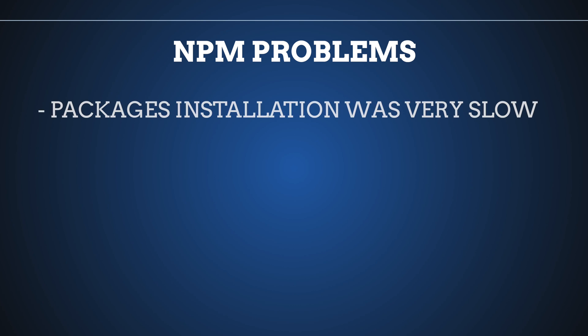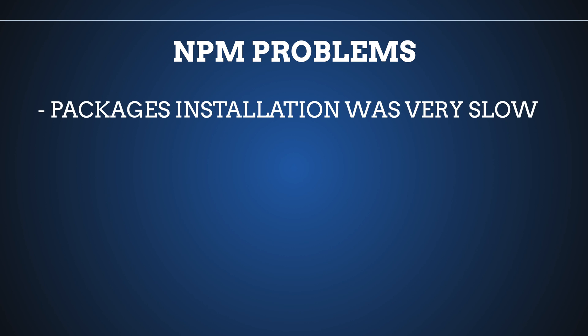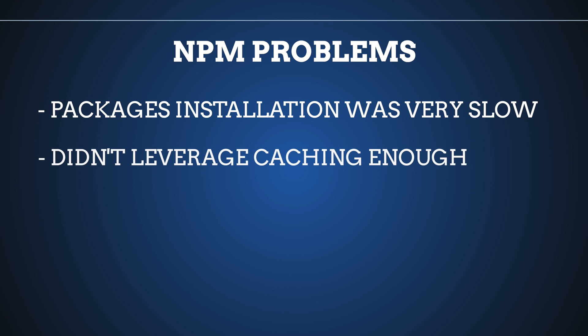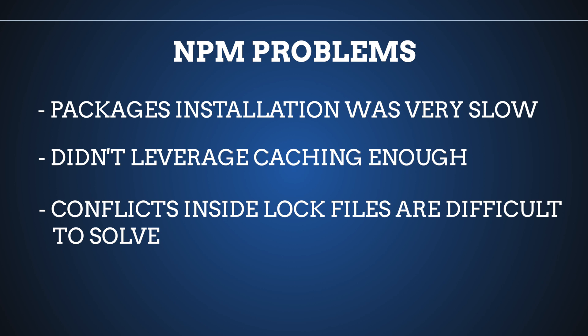Long ago we didn't have any alternative to NPM, so people simply used it. At that time NPM had three main problems. First, installation of packages with npm install was really slow. Second, it didn't leverage caching enough, so your next installation wouldn't be much faster than your first. Third, conflicts inside lock files were really difficult to solve, and many people submitted issues but the core team decided not to update anything because there was no alternative.